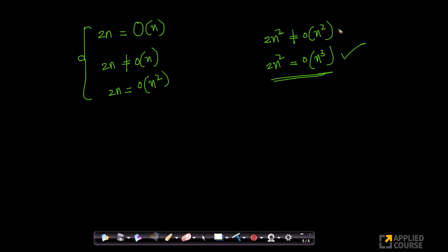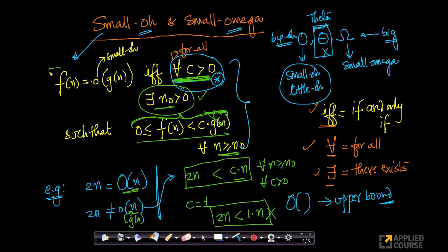Similarly, you can show that 2n² is not small-O of n², but 2n² is small-O of n³ — you can work out a proof very similar to what we have done. We will learn something called order of functions in the next couple of videos, which will make all these relationships much easier to understand. Here we are just defining what small-O is.